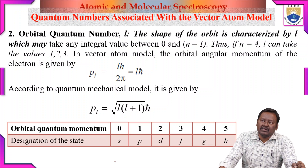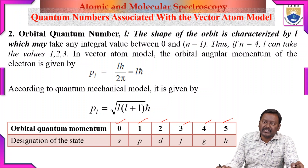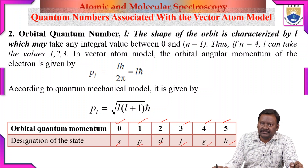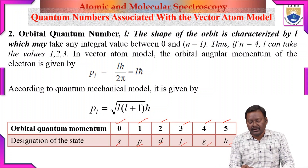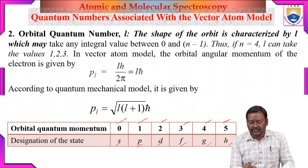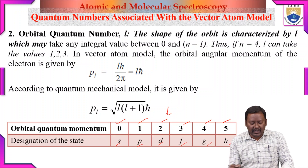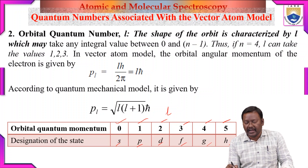In general, for orbital quantum numbers 0, 1, 2, 3, 4, 5, the designated states of the electron are indicated as S, P, D, F, G, H, etc. So for orbital quantum number 0 the state is S; for 1 it is P; for 2 it is D, and so on. The values of L can be from 0 to infinity, though in practice it may go up to about 7 maximum — S, P, D, F, G, H, I, and so on.